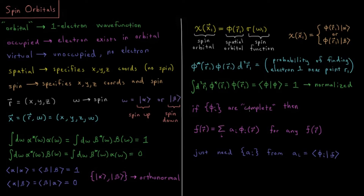of some coefficient times that particular function. So this is to say that a linear combination of a complete basis set can form any function of that same number of variables. This would be true for any function you could imagine in three-dimensional space if you have a complete set of spatial orbitals.